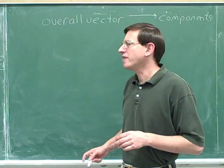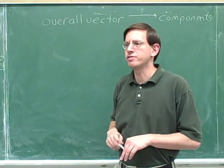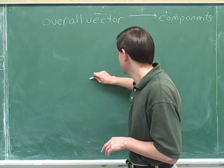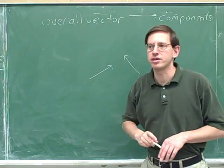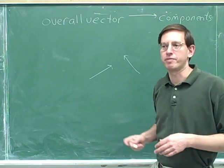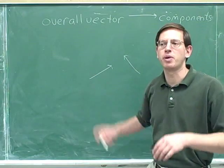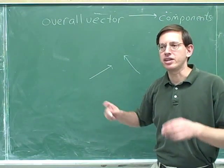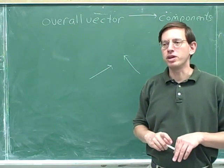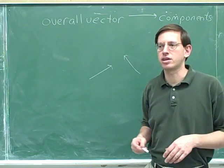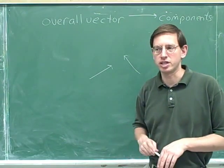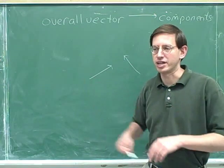The reason that's a good trick is that if you have a bunch of overall vectors, they're probably not parallel to each other — some are pointing one way and some are pointing another. But their components are going to be parallel to each other. All the horizontal components will be parallel or anti-parallel, and all the vertical components will be parallel. It's a lot easier to work with things that are parallel, so breaking vectors into components makes combining them much easier.